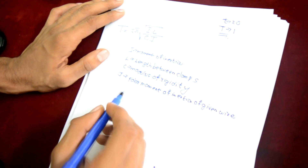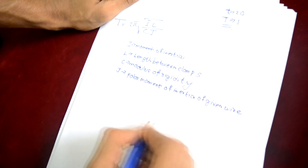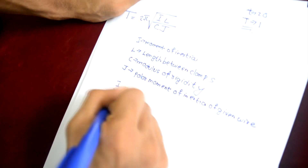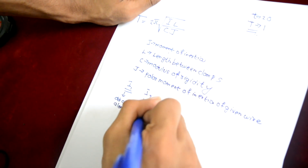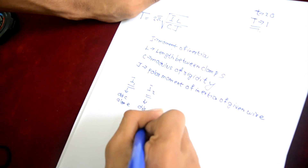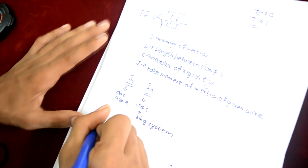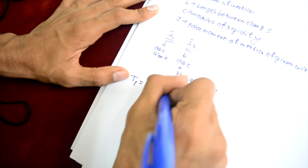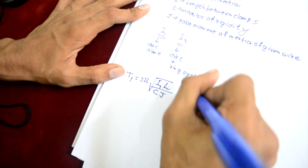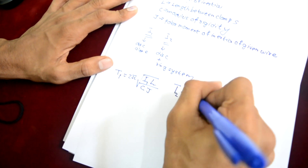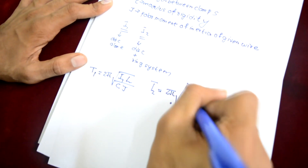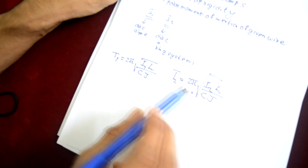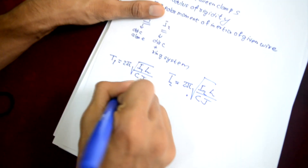First we take measurements for the torsion disk alone, and then for the torsion disk plus ring system. Here I1 and I2 are the two values we use. I1 is that of the disk alone and I2 is that of the disk plus ring system. The individual time periods T1 and T2 are: T1 for the torsion disk alone is 2π√(I1·L / CJ), and T2 for the torsion disk plus ring system is 2π√(I2·L / CJ). Here I1 and I2 are the mass moments of inertia of the torsion disk and the system respectively.